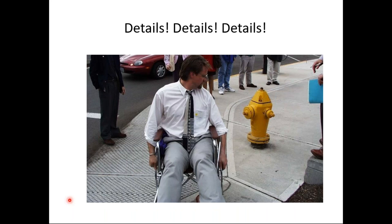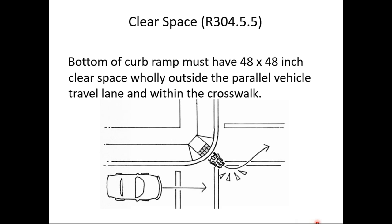Details are important. This looks like a fairly new ramp and turning space, but notice the fire hydrant makes this essentially non-functional as a turning space. ProAg also requires the bottom of a curb ramp to have a four-foot by four-foot clear space entirely outside the parallel vehicle travel lane and within the crosswalk. A single diagonal ramp does not meet that requirement. Note: this is just clear space — it does not need to be level or have a 2% cross slope.